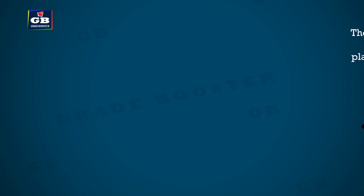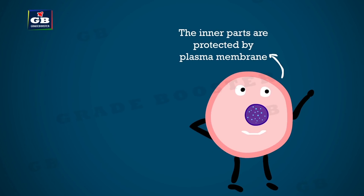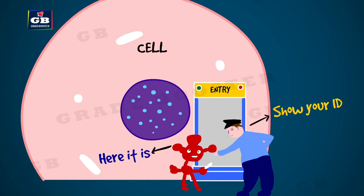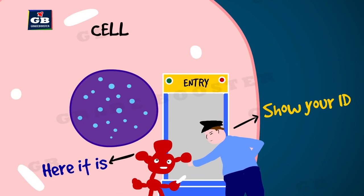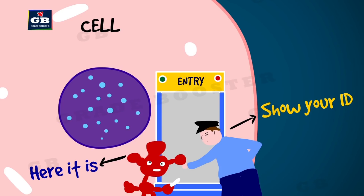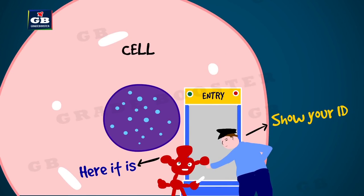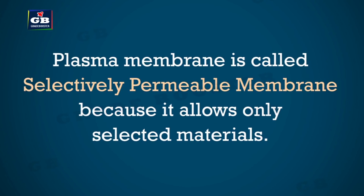The plasma membrane, or cell membrane, protects the inner components of the cell — just like skin protects the inner parts of your body. It controls the entry and exit of materials. It works like a checkpoint between two states, where verification is done. The cell membrane verifies materials and decides whether to allow them in or not, permitting only selected materials. For this reason, the cell membrane is called a selectively permeable membrane.